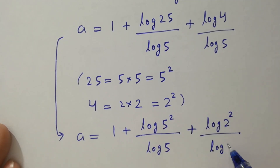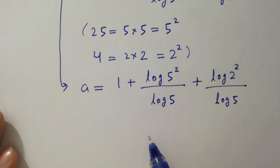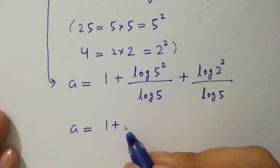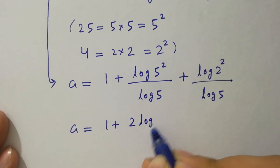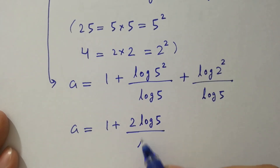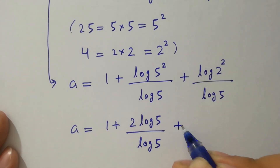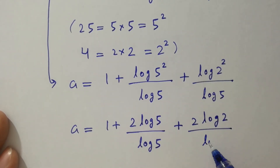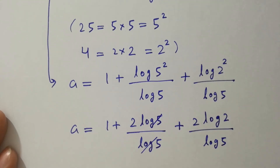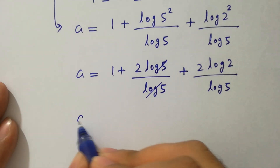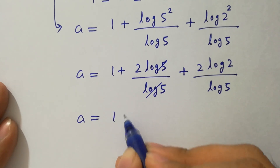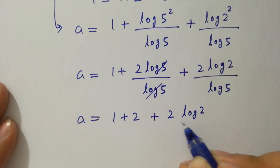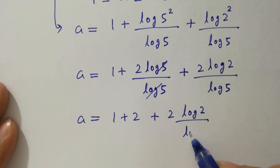A will be equal to 1 plus 2 log 5 over log 5, plus 2 log 2 over log 5. Log 5 cancels in the second term, giving a equals 1 plus 2 plus 2 log 2 over log 5.